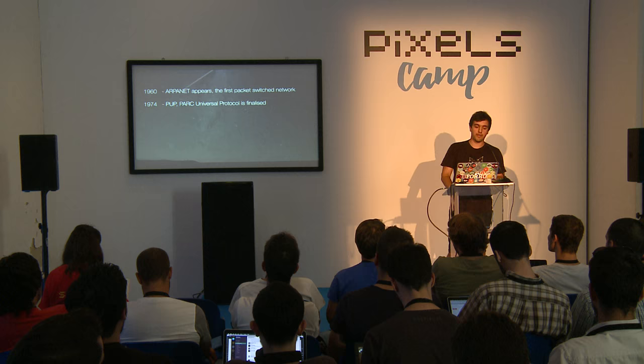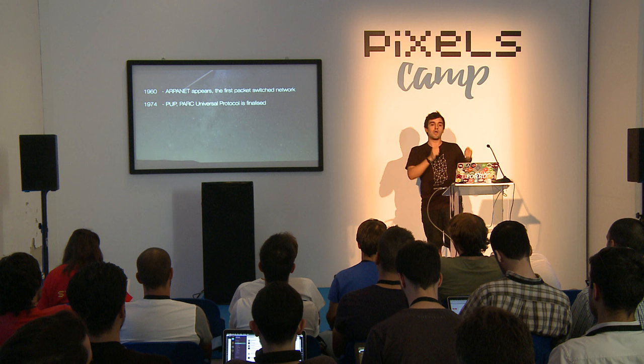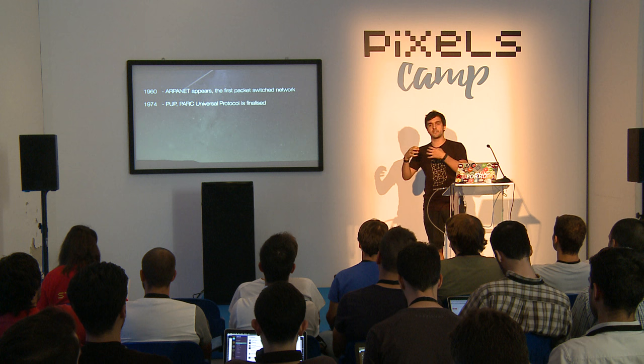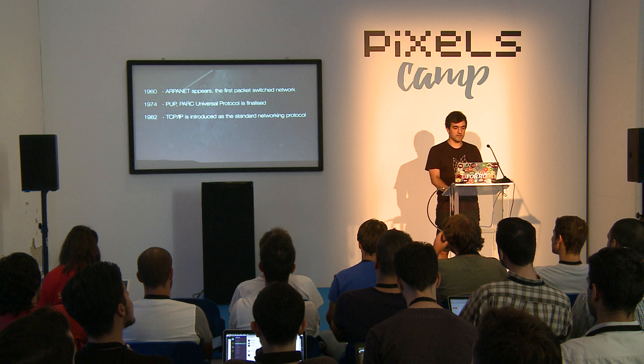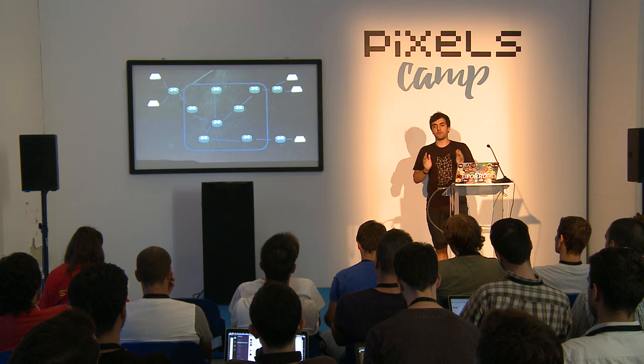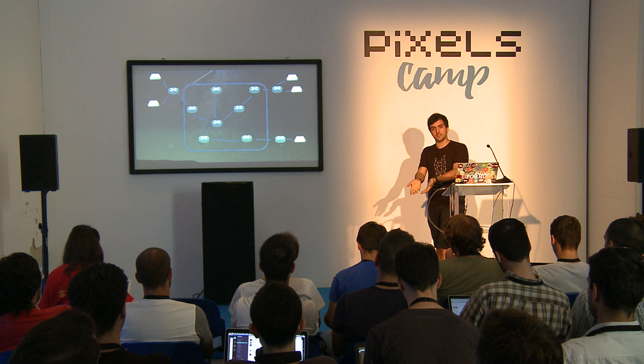It evolved a little bit, and in 1974 PUP, the Parc Universal Protocol, was finalized. PUP was a protocol to enable networks to connect to other networks — a way to know where a machine was connected so you could route packets to it. It was kind of a predecessor to TCP/IP. Then in 1982, TCP/IP was introduced as a standard networking protocol. We finally stopped worrying about where a machine was connected; we just had an address to send packets to, and we knew the packets would arrive. It was also the first time reliability on a communication channel was introduced.